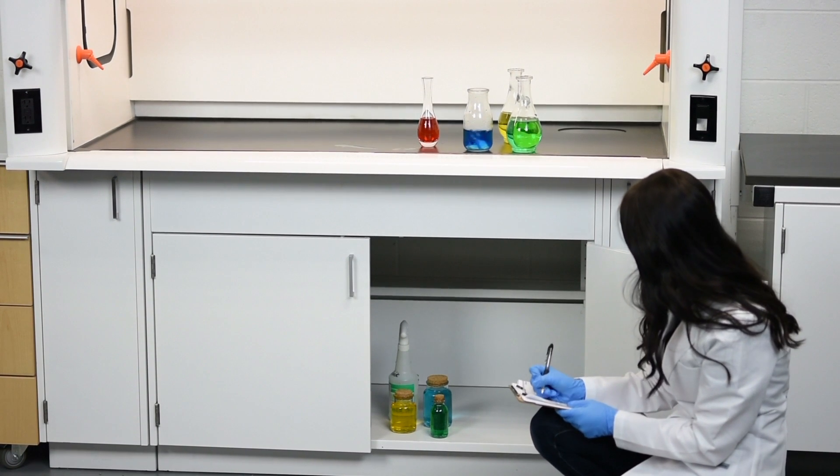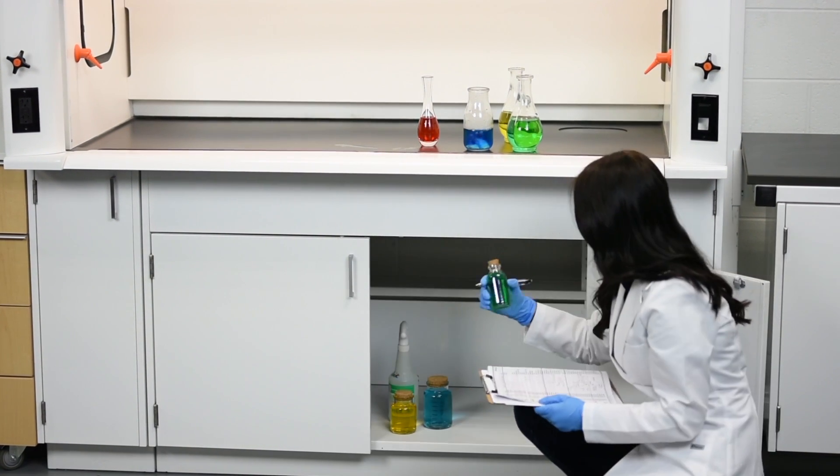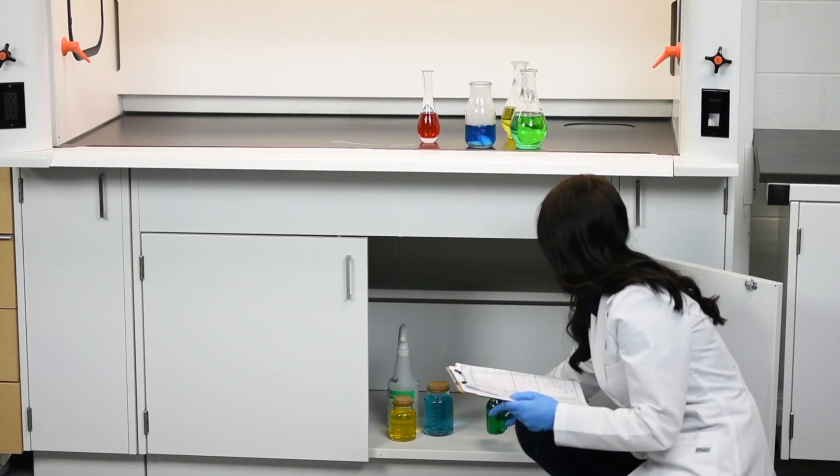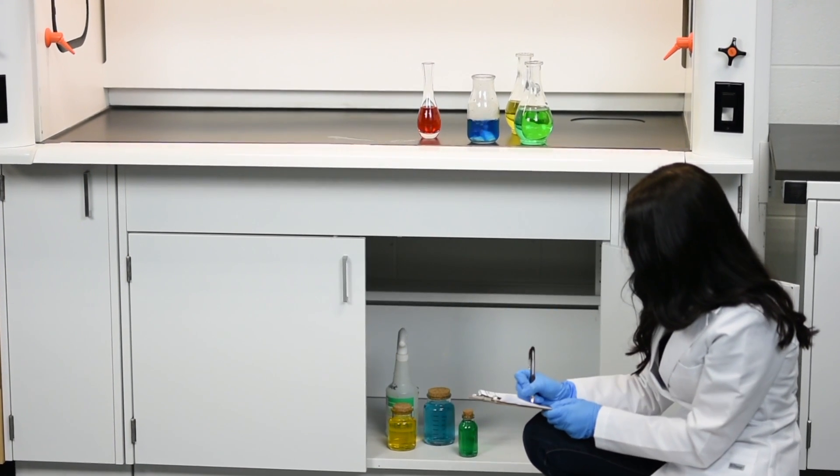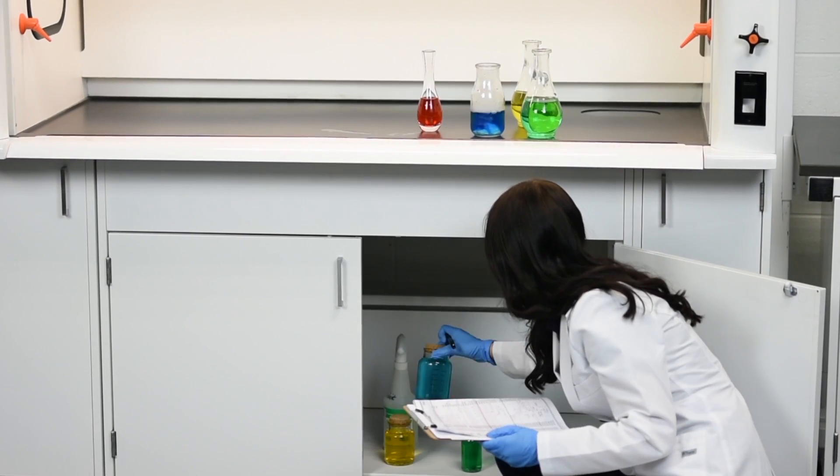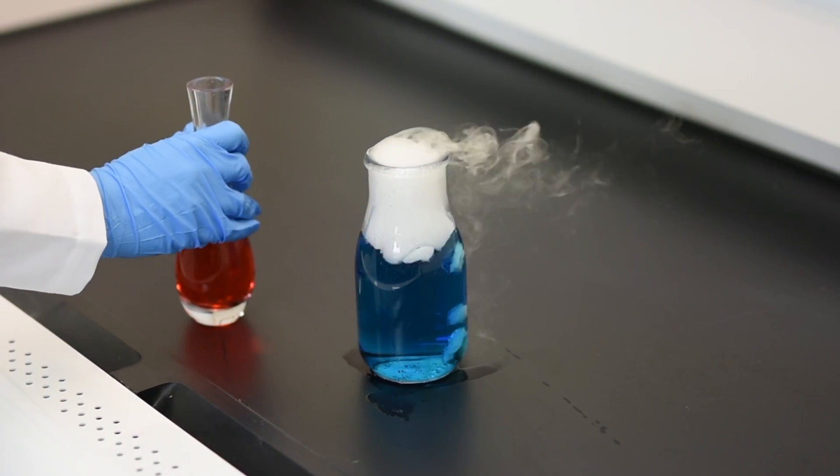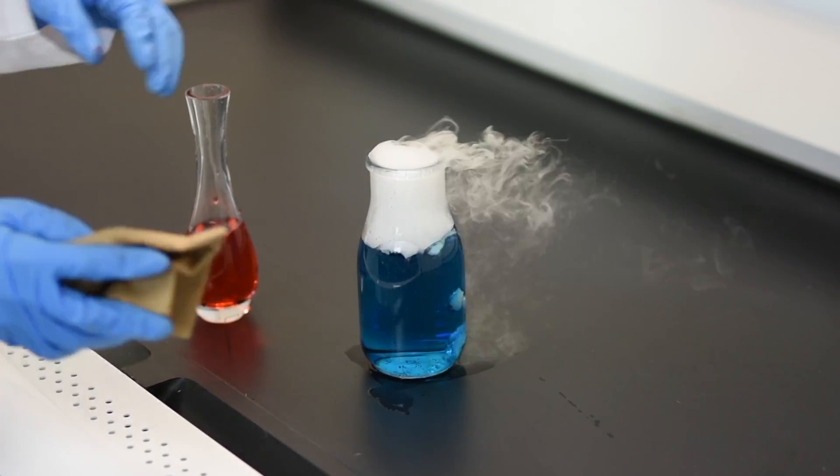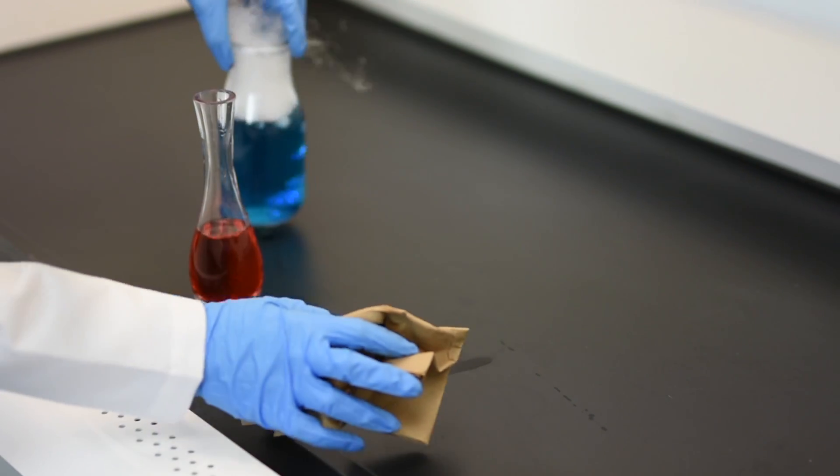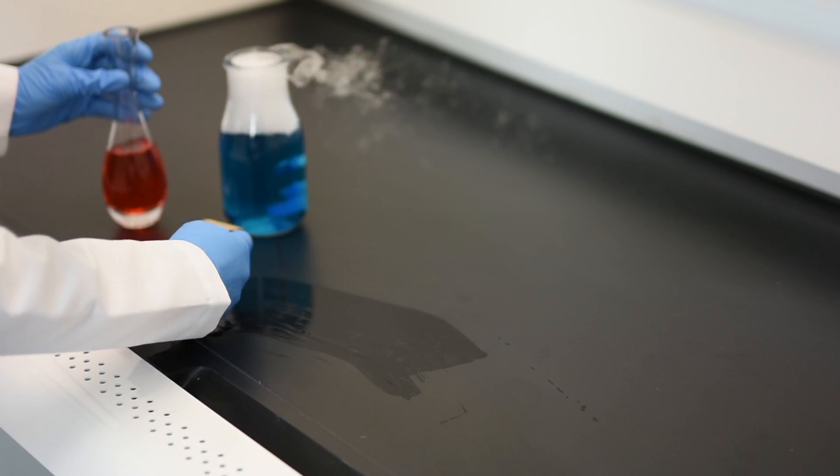It is also very important to keep track of all the chemicals stored under or near your fume hood. Make sure that all the caps are secure so that spills and leaks are kept to a minimum. If a spill does occur in your fume hood it is important to move all of the chemicals away from the spill. It is also important to clean this area up thoroughly and immediately.